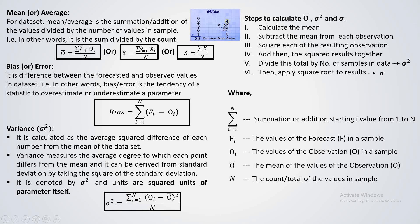Variance is denoted by sigma squared, and the units are the squared units of the parameter itself. For example, if you are calculating the variance of a parameter with units in meters, you will get squared meters as the units of variance. Similarly, if the units are kilometers, you get squared kilometers. For beginners: first calculate the mean, subtract the mean from each observation, square each of those results, add them together, and divide by the number of samples to get the variance.